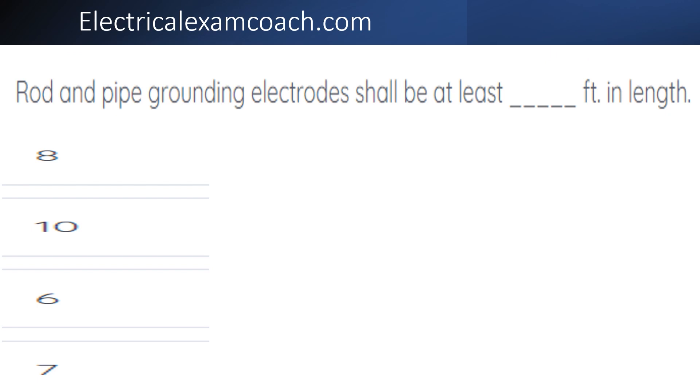Cotton pipe grounding electrodes shall be at least blank feet in length. The correct answer is 8.